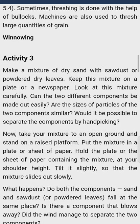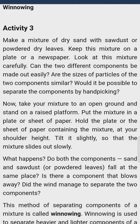Winnowing — Activity 3. Make a mixture of dry sand with sawdust or powdered leaves. Keep this mixture on a plate or a newspaper. Look at this mixture carefully — can the two different components be made out easily? Are the sizes of particles of two components similar? Would it be possible to separate the components by handpicking? Now take your mixture to an open ground and stand on a raised platform. Hold the plate or sheet of paper at your shoulder height. Tilt it slightly so that the mixture slides out slowly. What happens to both the components? Sand and sawdust fall at different places — did the wind manage to separate the two components?